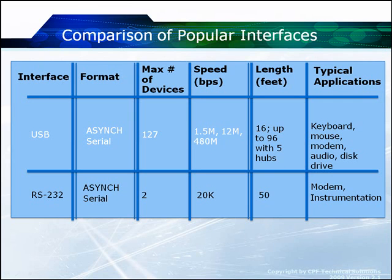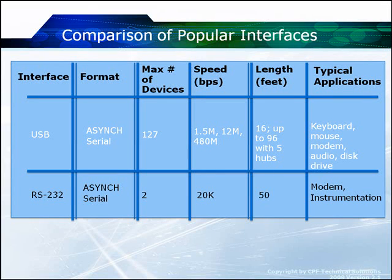Speed in USB: low speed devices are 1.5 megabits per second, full speed devices are 12 megabits per second, and high speed devices are 480 megabits per second. The cable length can be up to 16 feet, or up to 96 feet if you have 5 hubs. Typical applications include keyboard, mouse, modem, and disk drives — it is a peripheral connectivity protocol.